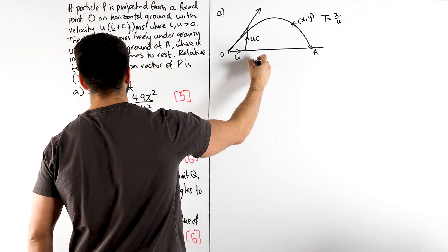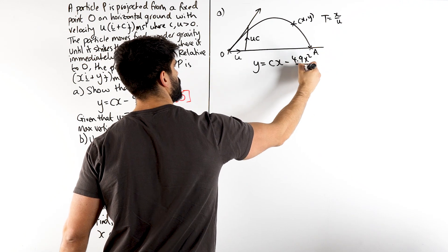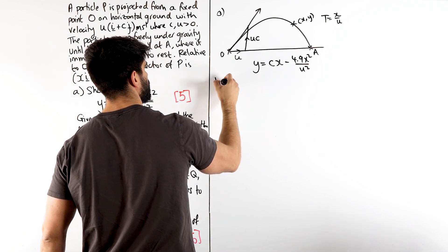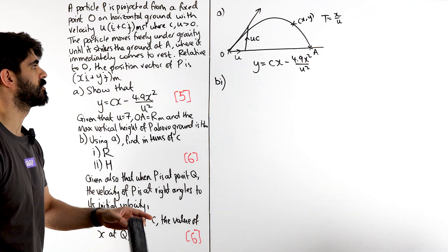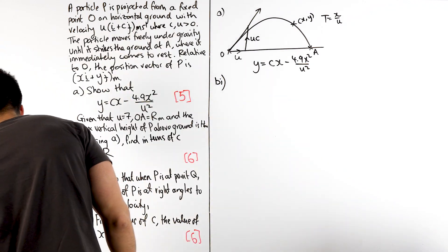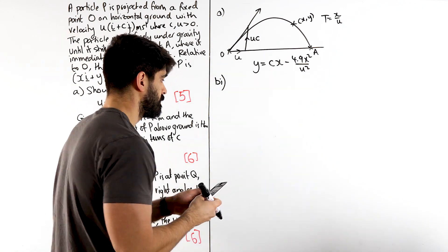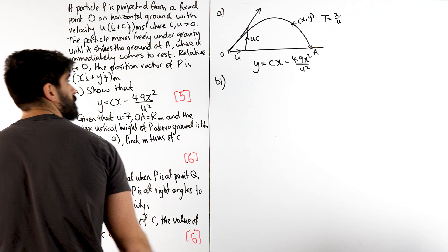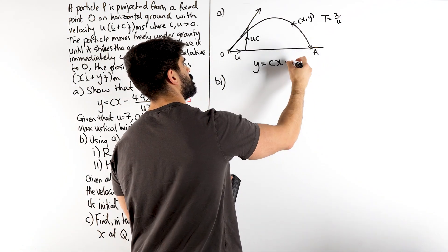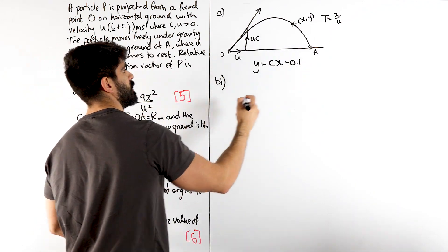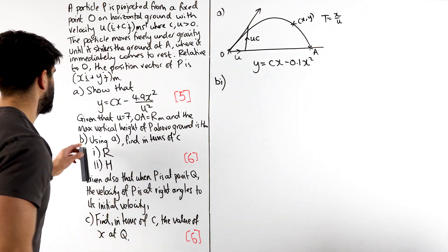because as I have shown countless times, it is a mucho importante equation. So, we have, from part A, Y is CX minus 4.9 X squared over U squared. Part B(i). Given that U is 7. Might as well do that, right? If U is 7, that's 49. 4.9 over 49 is 1 tenth, so 0.1, right? Let me just replace that. Might as well. 0.1 X squared. So, there you go. There's your equation of the quadratic, the negative quadratic.